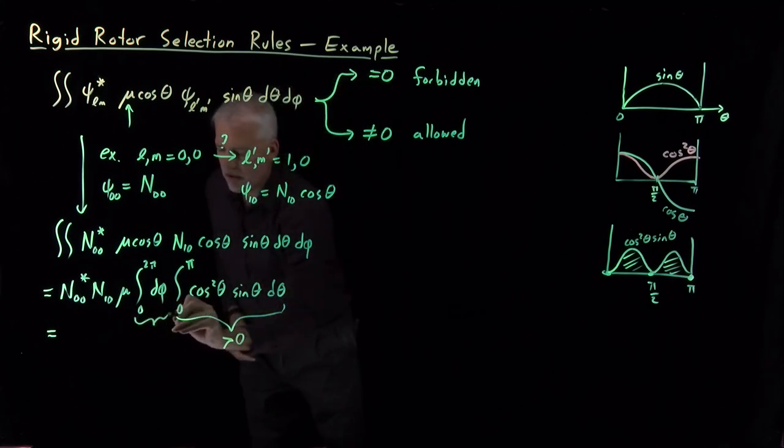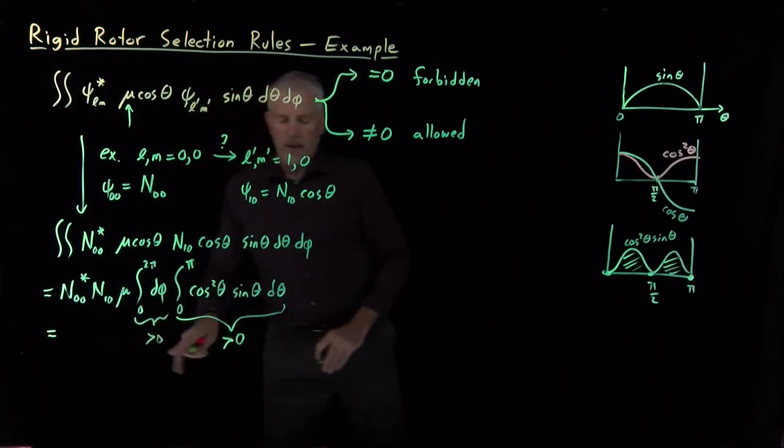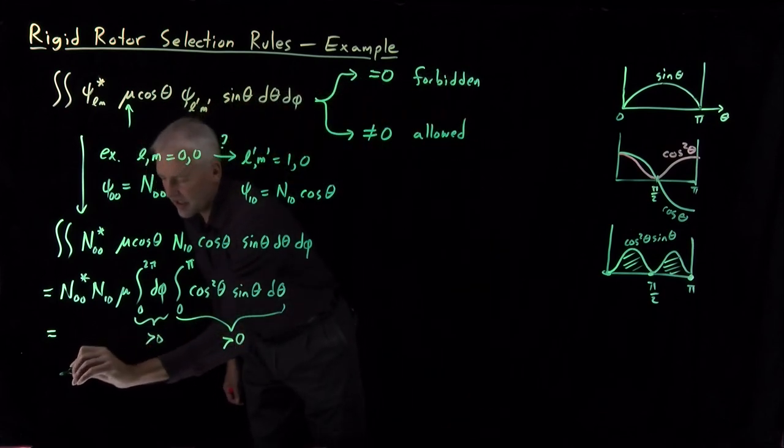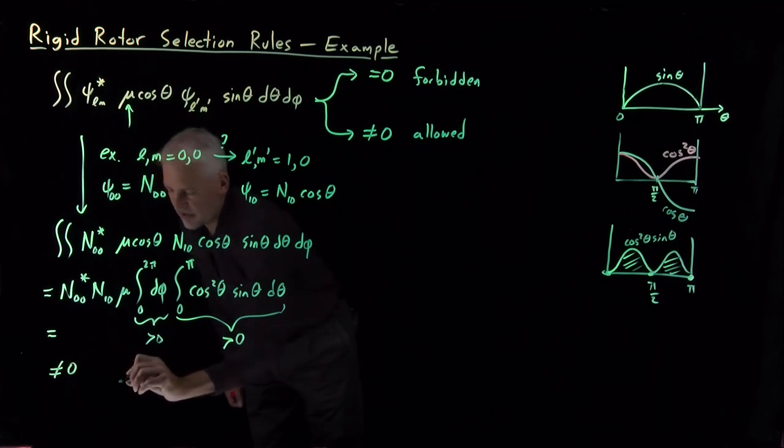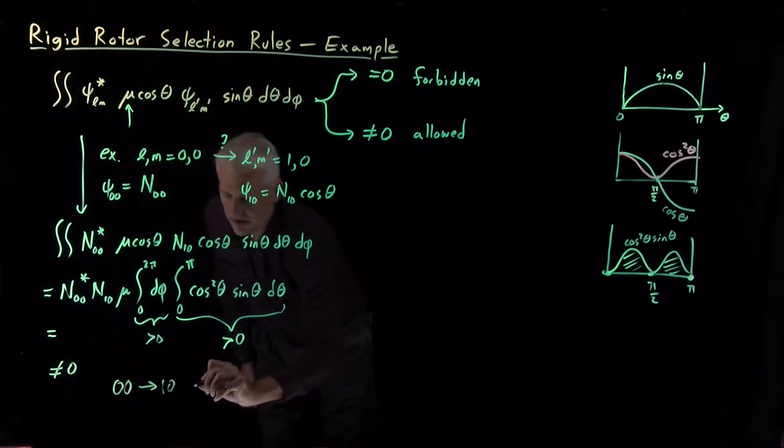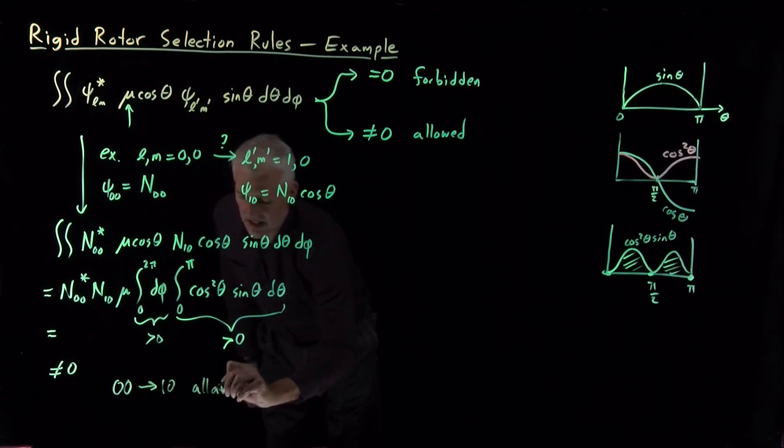Likewise, this term is greater than zero. So without knowing the specific value, that's enough for me to say this total integral is non-zero. So this zero-zero to one-zero transition for the rigid rotor is, in fact, an allowed transition.